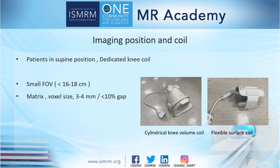Typically, the patient position is supine with feet first, and we use dedicated knee coils. The patient is typically positioned supine with the affected knee fully or almost fully extended in the coil. Leg external rotation is mildly comfortable for the patient. Gentle immobilization of the extremity and use of comfort measures for the entire body will assist in reducing involuntary motion and the resulting artifact.